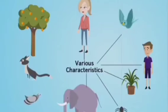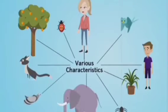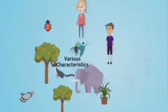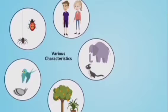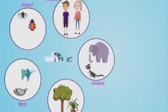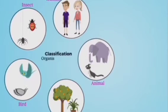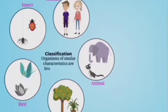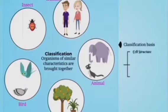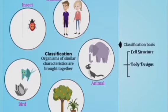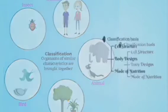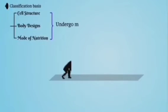Classification and evolution of organisms. Animals and organisms are of varied types of characters. Animals are classified based on similar characters, which helps in identification of organisms. They are classified by special characters such as cell structure, body design, and mode of nutrition.